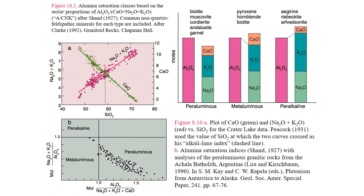A peraluminous rock contains more aluminum than the combination of sodium, potassium, and calcium, and typically contains minerals such as biotite, muscovite, cordierite, andalusite, or garnet. Metaluminous rocks contain more aluminum than potassium and sodium alone, but less aluminum than potassium plus sodium plus calcium. Common mineral phases in metaluminous rocks include pyroxenes, hornblende, and biotite — though biotite alone is insufficient to distinguish peraluminous from metaluminous, requiring a second unique phase. Peralkaline rocks contain less aluminum than sodium and potassium combined, forming with unique minerals such as arfvedsonite, riebeckite, and other amphiboles unique to aluminum-depleted systems.